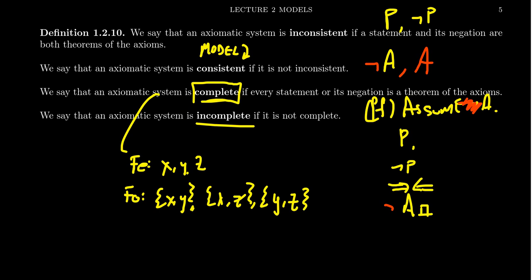Most theories in mathematics are incomplete — there will be some statements which are neither true nor false because they're independent of the axioms. Take group theory, for example. Group theory is incomplete because, given a binary operation that is associative with an identity and inverses, we can't determine whether the operation is commutative or not. There exist non-commutative groups and commutative groups, so group theory can't settle the question.